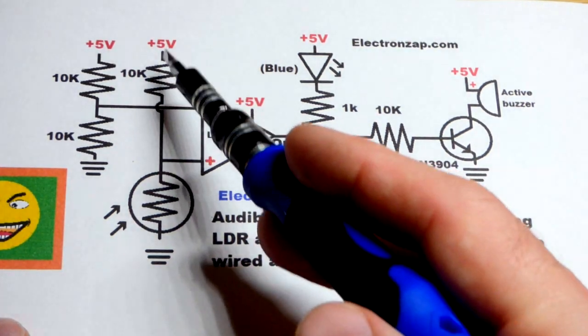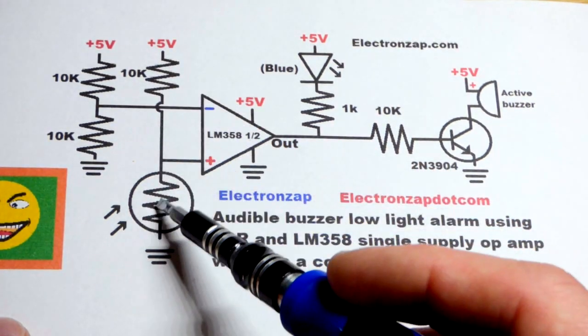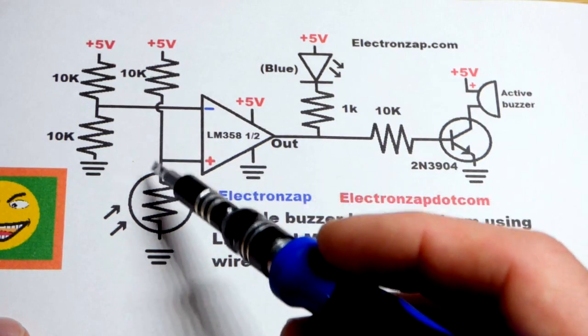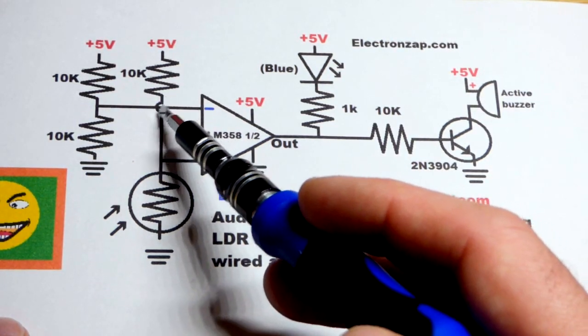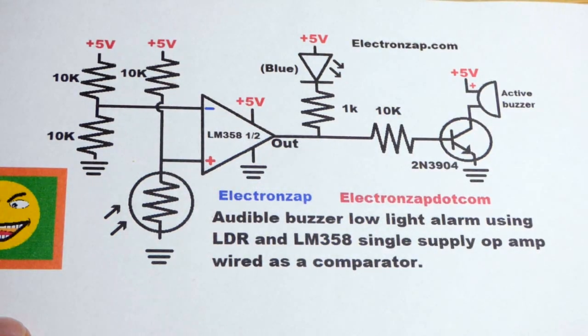Last video though, the light-dependent resistor was on the positive side. This time, it's on the negative side. By the way, when you see wires connect like this, but one's curved, that means it's jumping over that wire. They're not connected.